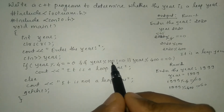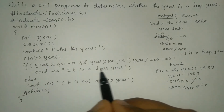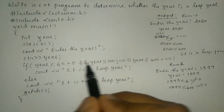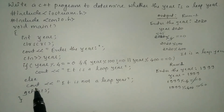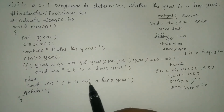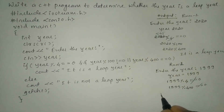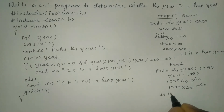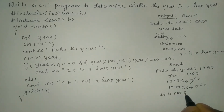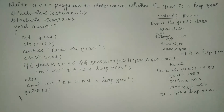Since the overall condition is false, the if block does not execute and control jumps directly to the else part, which prints 'It is not a leap year'.